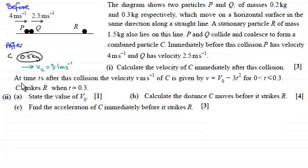Now in this next part, we're told that at time t seconds after this collision, the velocity v meters per second of C is given by this formula here, v equals v₀ minus 3t² for t greater than 0 but less than or equal to 0.3. And C strikes R when t equals 0.3.